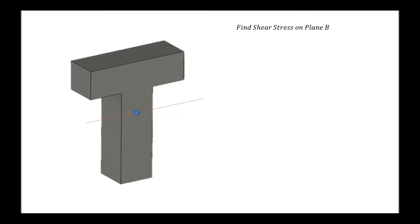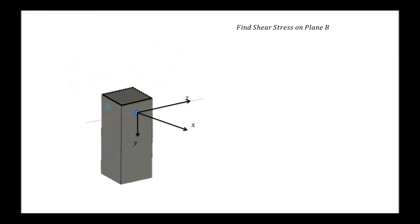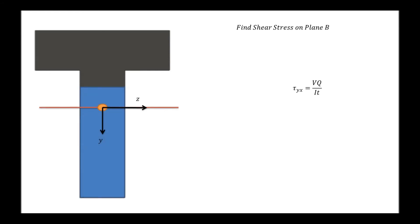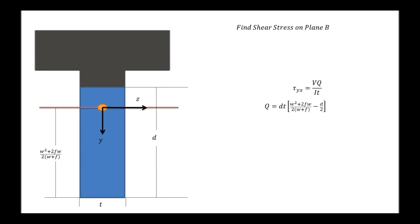Now we're going to find the shear stress on plane B. With our coordinate axes shown, we can see where cut B is made. Removing the top portion, the section has a depth of delta x and a thickness t. Tau yx runs across the surface and equals VQ over IT. Looking at the cross-section from the front, the area spans a little above and below the neutral axis. The distance to the neutral axis is W squared plus 2FW over 2 times the quantity W plus F. Therefore, Q equals dt times the quantity W squared plus 2FW over 2(W plus F) minus d over 2.